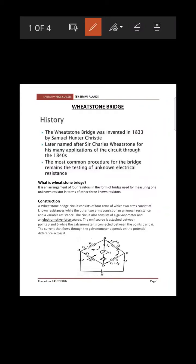Now we will learn about the Wheatstone bridge. A Wheatstone bridge is an arrangement of four resistors in the form of a bridge. As you can see in this diagram, four resistors are connected in bridge form. With a Wheatstone bridge we can find out the unknown resistance. We have two fixed resistors P and Q, a variable resistor R, and an unknown resistance S.